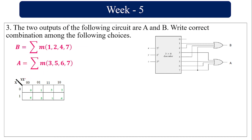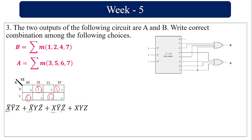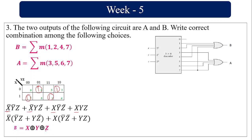The K-map variables are X, Y, Z with cell ordering 0, 1, 3, 2, 4, 5, 6, 7. Filling in minterms 1, 2, 4, 7 for B: grouping individually gives X̄·Ȳ·Z̄, X̄·Y·Z̄, X·Ȳ·Z̄, and X·Y·Z. Taking X̄ common from the first two and X common from the last two: X̄(Ȳ·Z + Y·Z̄) + X(Ȳ·Z̄ + Y·Z). This simplifies to B = X XOR Y XOR Z.